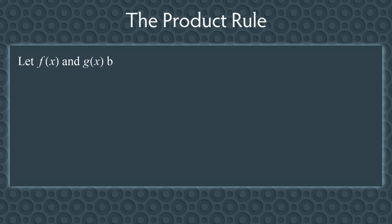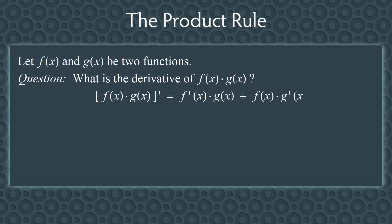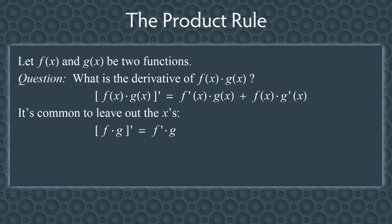Let f(x) and g(x) be two functions. What's the derivative of f(x) times g(x)? This is given by the product rule. It says that the derivative of f(x) times g(x) is equal to the derivative of f times g plus f times the derivative of g. When working with functions it's common to leave out the x's, giving: the derivative of fg equals f′g plus fg′.